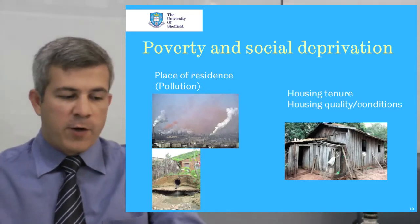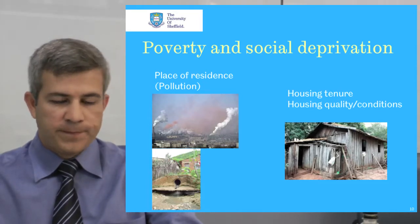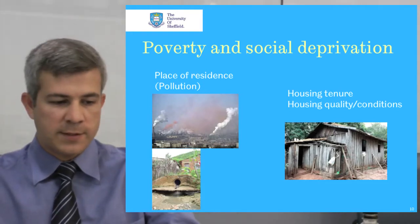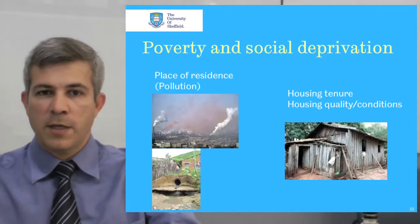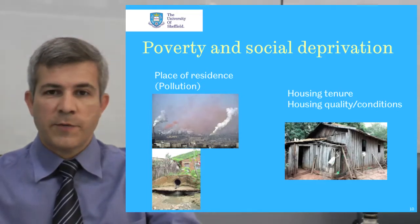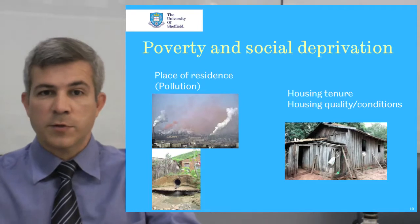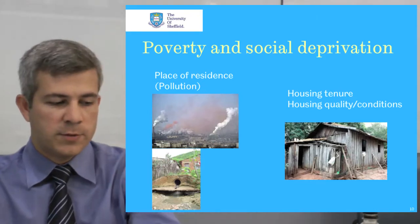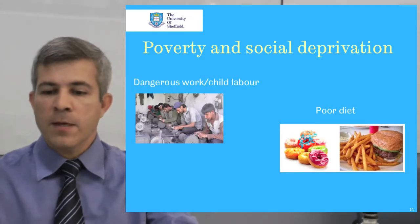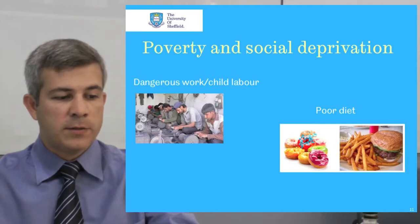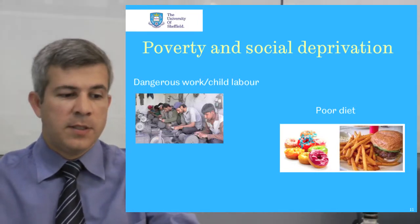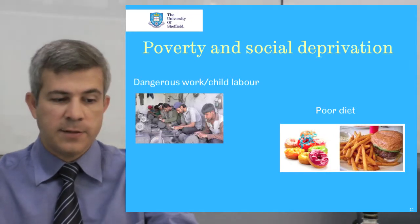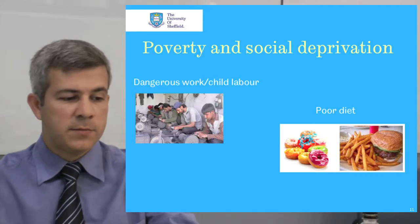It is well known that unhealthy environments where people live and work affect health. Pollution, lack of sanitation, and poor housing conditions expose people to several diseases. Although the link between social deprivation and infectious disease is clear as a result of lack of sanitation and inadequate water supply, multifactorial and non-communicable diseases have also been strongly related to poor social conditions. Socially disadvantaged people do more dangerous work and are therefore more exposed to accidents and disabilities. They usually have poor diets, since unhealthy food is cheaper and more available in socially deprived areas.